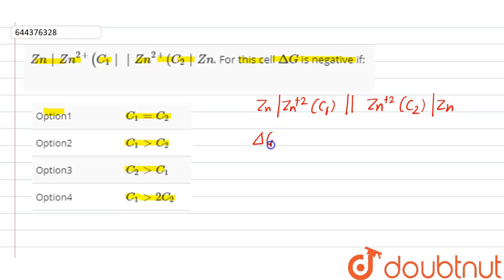Now we want delta G to be negative. For delta G to be negative, the EMF of the cell must be positive.